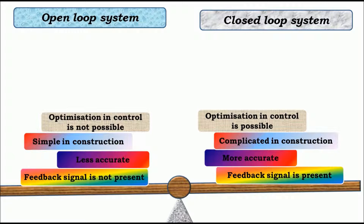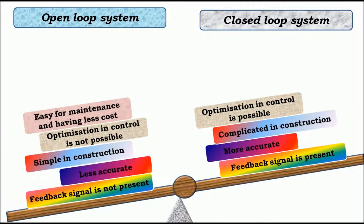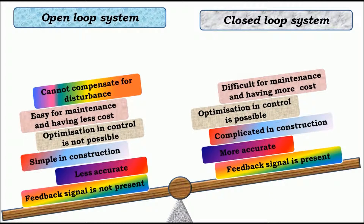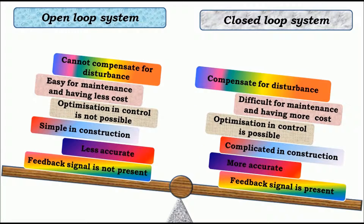The fifth difference is open loop systems are easy for maintenance and have less cost, whereas closed loop systems are difficult for maintenance and have more cost. Open loop systems cannot compensate for disturbances, while closed loop systems can compensate for disturbances.